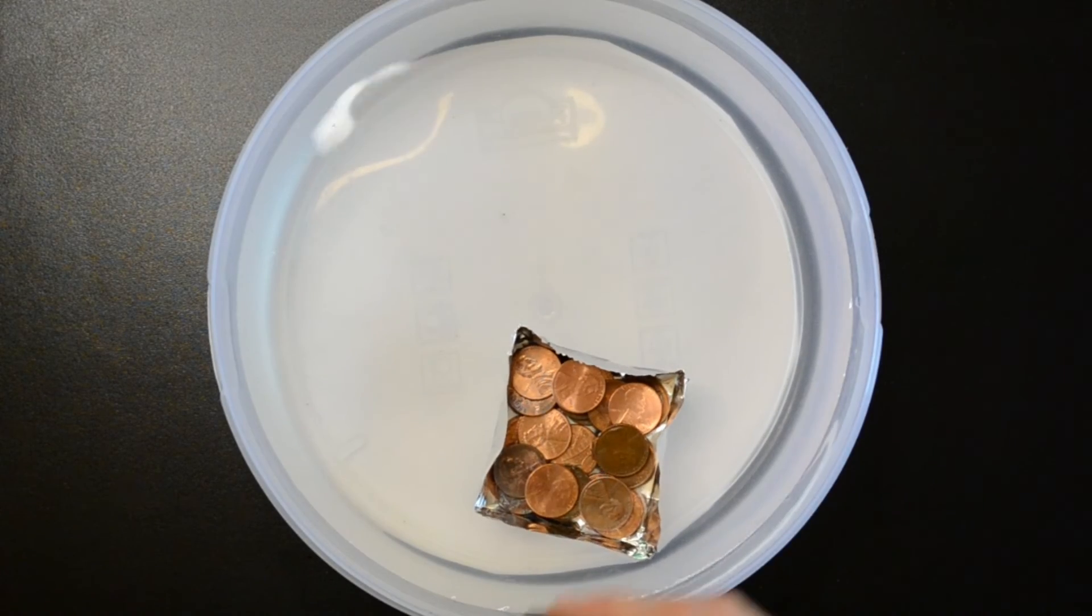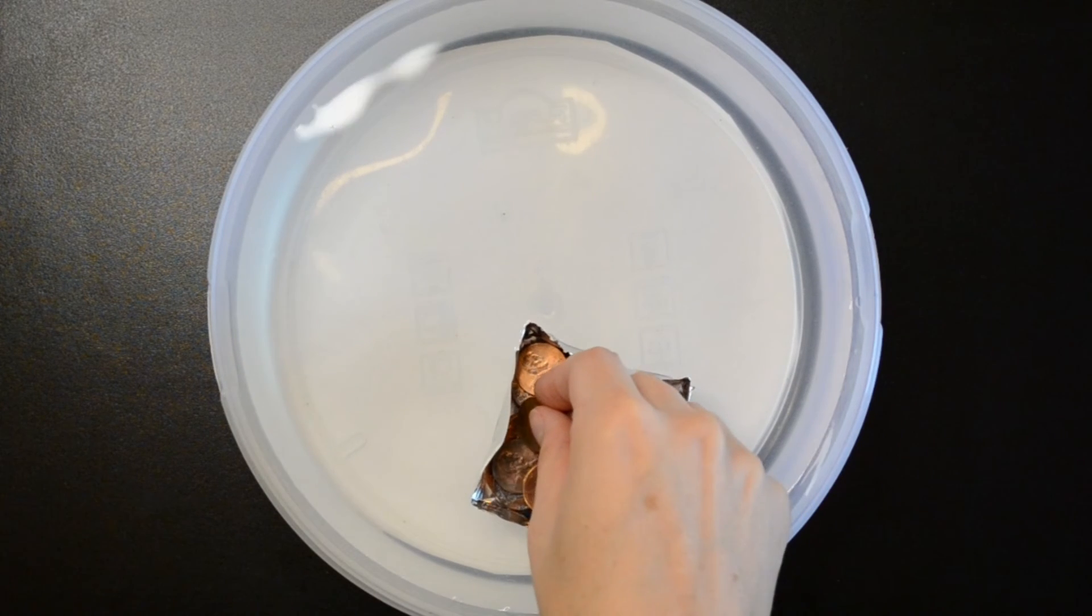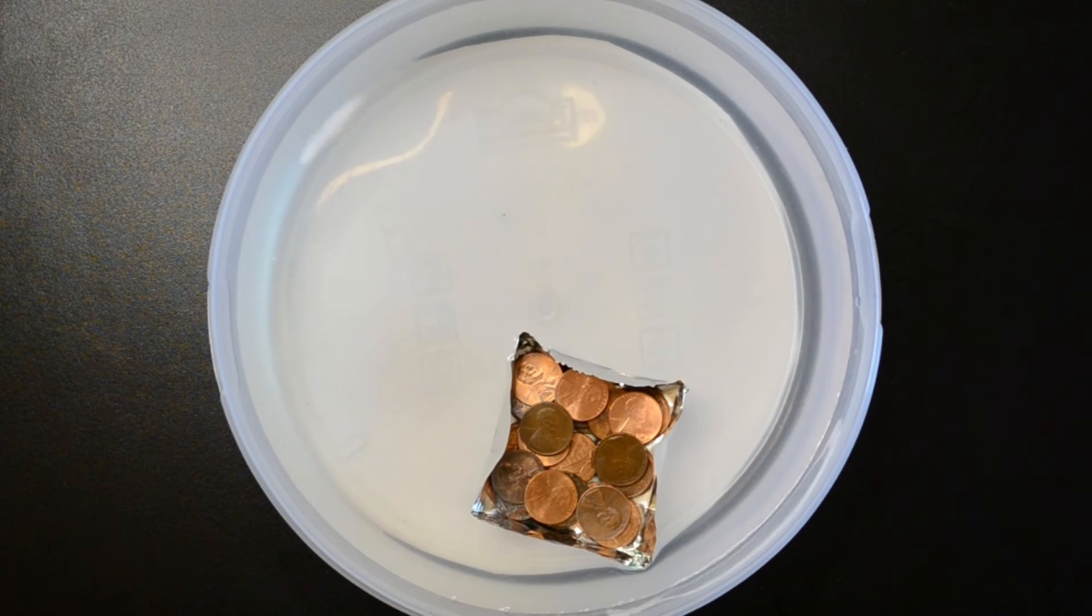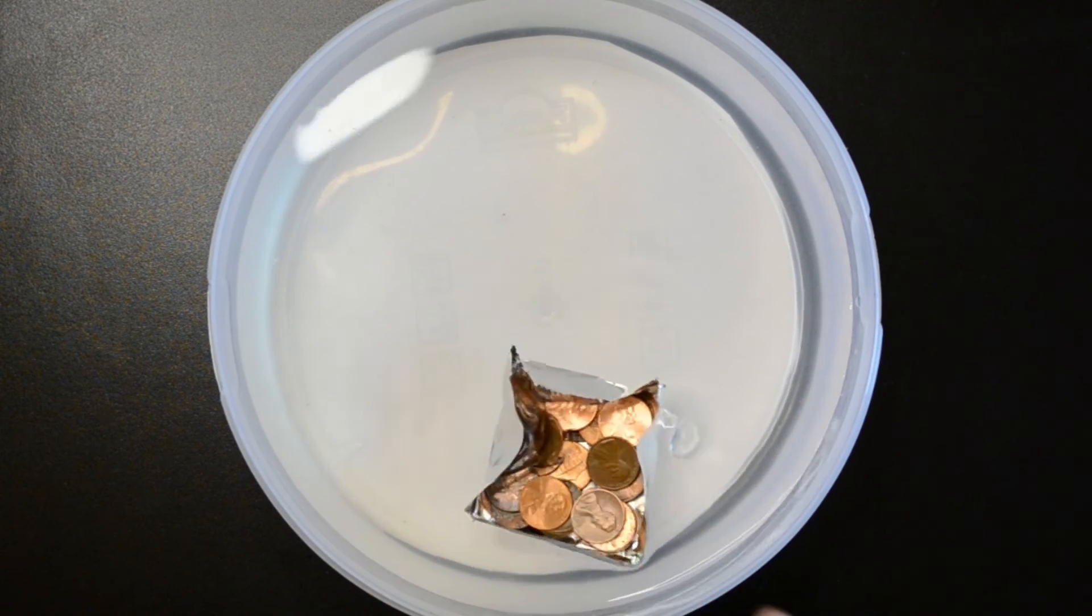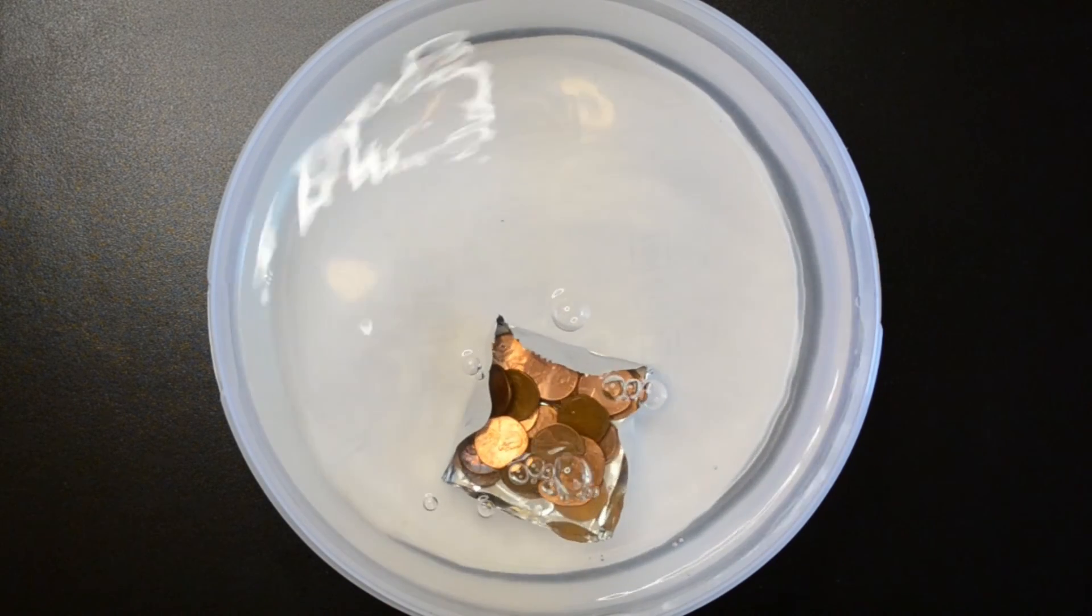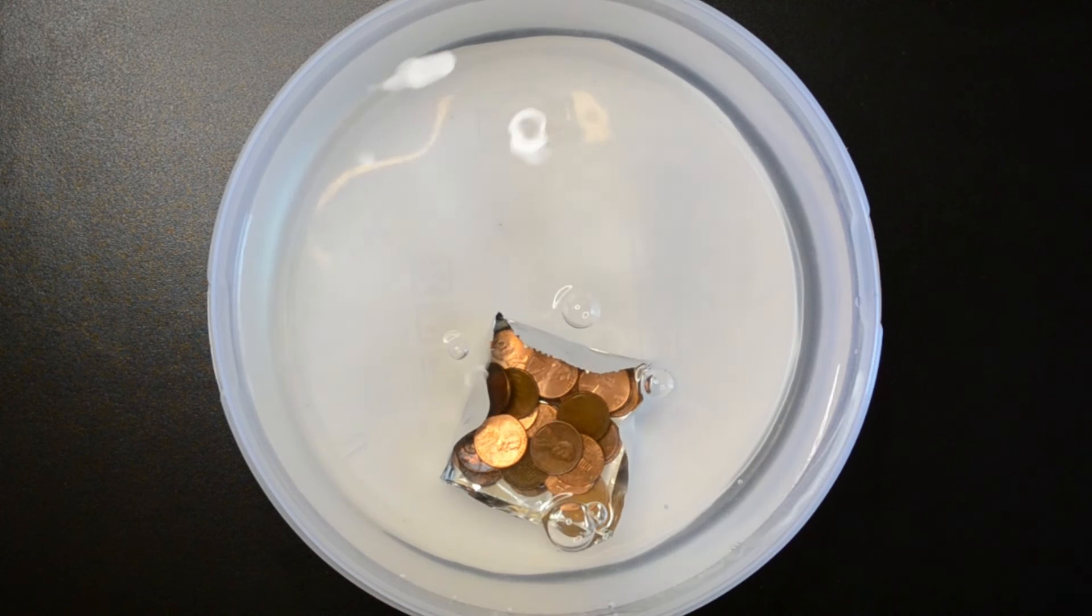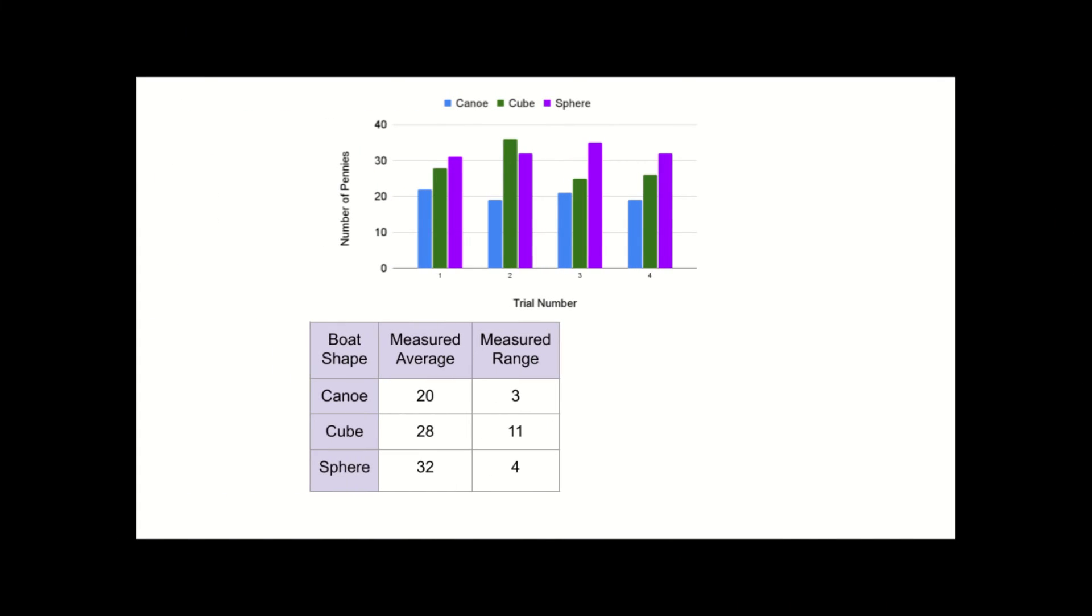We saw that the number of pennies depended on how the pennies were loaded and with the canoe and cube we saw low numbers of pennies when the walls caved in. I did four trials for each shape to get a sense of the variability between attempts. The data for each trial was shown in the plot at the top and then I've summarized the results in the table on the bottom. The canoe had the lowest average at 20 but was fairly repeatable with a small range of 3.